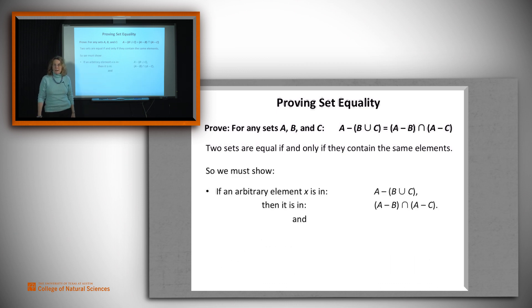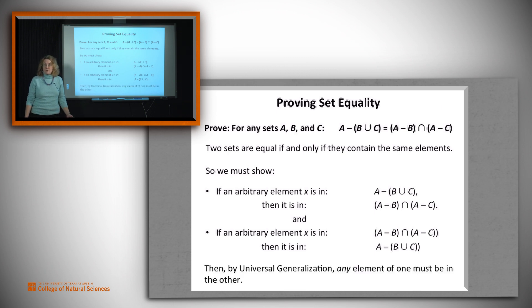We prove one direction, that if X is in the first of these sets, then it must be in the second one. And then we prove the other direction, that if it's in the second one, it must be in the first. And then we can use universal generalization to say, if this is true of some arbitrary value X, it has to be true of all values. And then we've got the proof that we need.